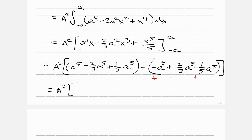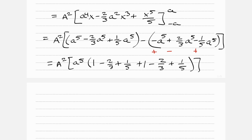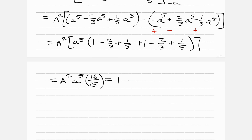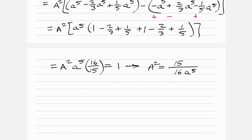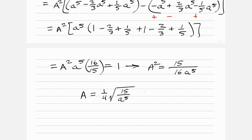This equals A² times a⁵ times [1 minus 2/3 plus 1/5 plus 1 minus 2/3 plus 1/5], which equals A² a⁵ times 16/5. That was equal to 1, so A² equals 15 over 16a⁵. Taking the square root, A equals (1/4) times the square root of 15 over a⁵. That is our normalization constant.